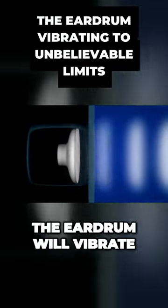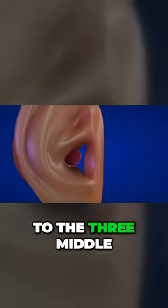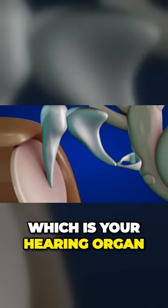As sound enters the ear canal, the eardrum will vibrate and transfer that vibration to the three middle ear bones called ossicles, so it can then be sent into your cochlea, which is your hearing organ.